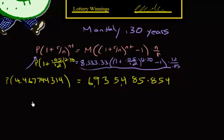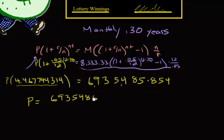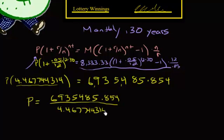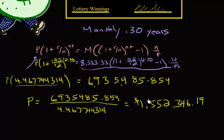I go out to as many decimals as it allows, and now I can solve for the present value. I'm going to divide both sides by that 4.467744314. So we get 6,935,485.854 divided by 4.467744314, and what we're going to get is $1,552,346, and I'll round to 19 cents.